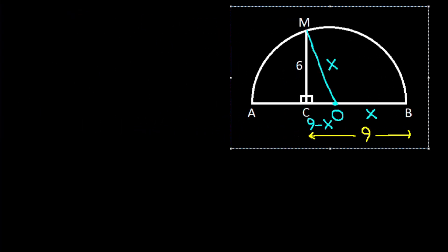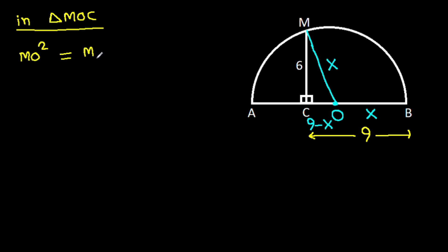And now, in triangle MOC, MO squared will be MC squared minus OC squared by Pythagoras theorem.